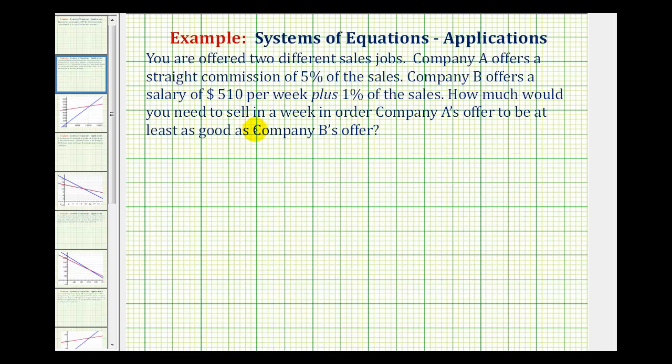So we're going to solve this by setting up a system of equations and then we'll solve the system. The two unknowns in this problem are the weekly pay and the amount of sales. So let's let P equal the amount of weekly pay and let's let S equal the amount of weekly sales.